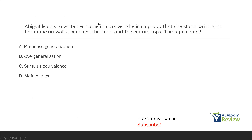In this case, we taught Abigail how to write in cursive. She now starts writing her name on the walls, benches, floors, and countertops. Certainly this is generalized, and it's maintained. However, this represents the downside — because it didn't necessarily maintain in the way we'd want, since we've never taught her to write on the walls, benches, floors, and countertops. So Abigail learned to write her name in cursive and it generalized, but in an inappropriate way.